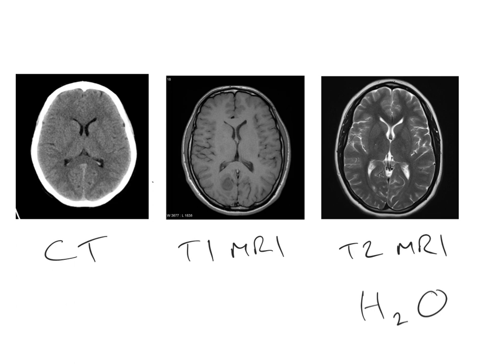This increased sensitivity of MRI also helps us in the early diagnosis of lesions such as strokes. An early ischemic stroke where there is no bleeding would not show up very clearly at all on a CT scan, but you would see it very obviously on an MRI of that same person.